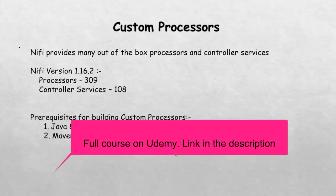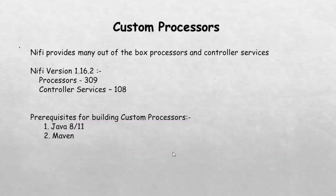Hey guys, in this lecture we will see custom processors. NiFi provides many out-of-the-box processors and controller services. In the latest version of NiFi, which is 1.16.2, there are around 309 processors and 108 built-in controller services. These built-in processors can handle most use cases in a data pipeline project, but there are still scenarios where you would like to build your own custom processor. NiFi provides an option to build and deploy your custom processor.